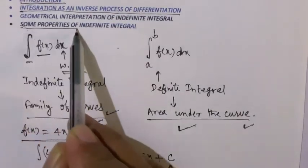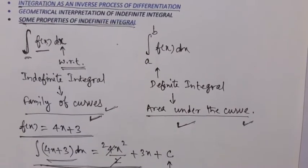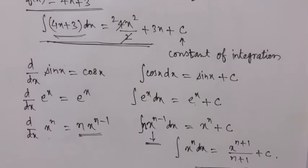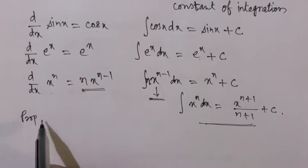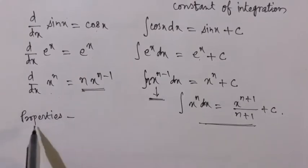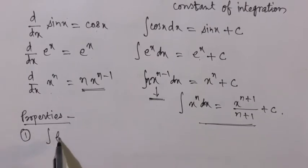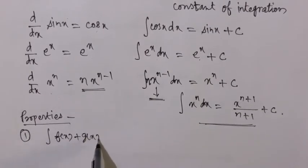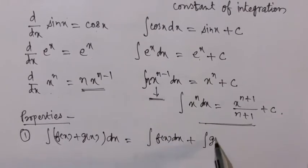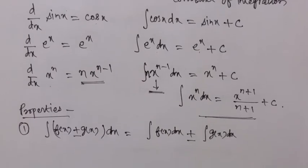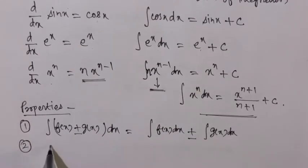Now the fourth and last discussion point: some properties of indefinite integrals. Just as we had properties for limits and differentiation, here too we have properties. First property: if you have f(x) + g(x), you can integrate them separately and then add the results. Similarly for difference — you can integrate separately and subtract.